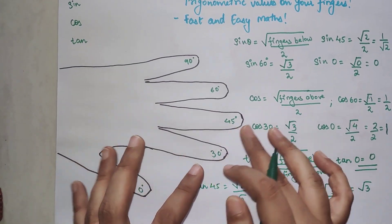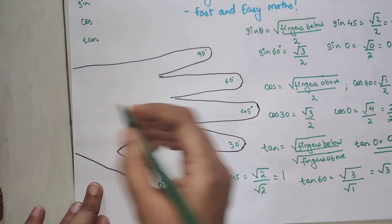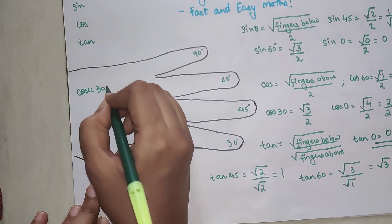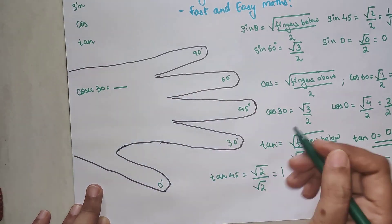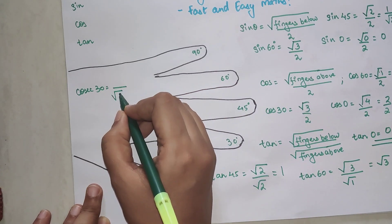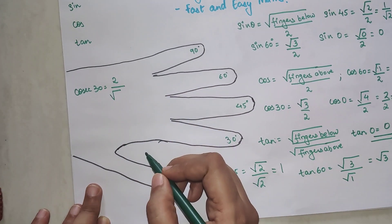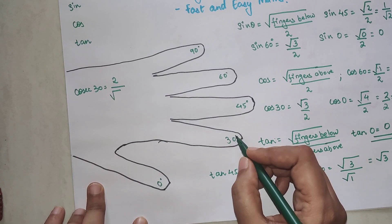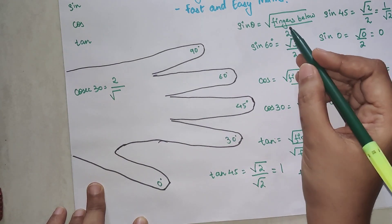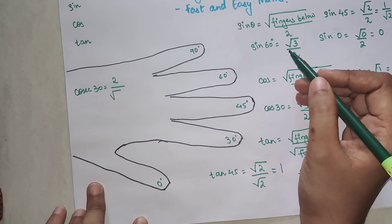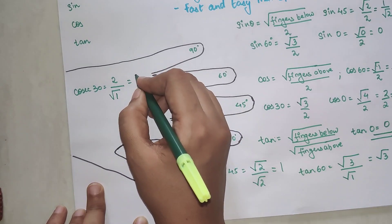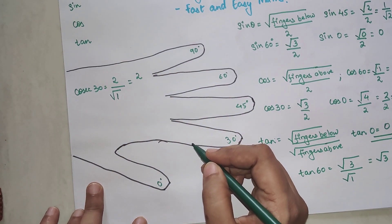Now very quickly if we want to do this orally, if I want to do cosec, cosec of 30. So what is my answer? Please understand now this will be the reverse. So my final answer will be root will come here and 2 will come on top. So cosec 30 basically is nothing but sin 30 formula in reverse. So how many fingers are below 30? We have just 1. So root of 1 is nothing but 1. So final answer is just 2.